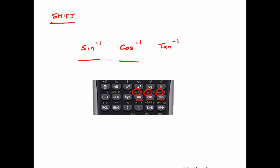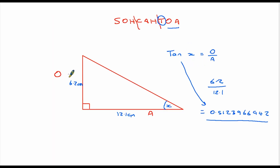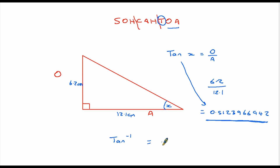Let's go back to our question. We used opposite divided by adjacent, which gave us tan of X. We already know the tan, so I am going to use tan⁻¹ to reverse it so that the tangent becomes the size of the angle. To do that I press shift, press the tan button, then type in the whole number, and rounded to one decimal place I get 27.1 degrees — and that is the size of the angle.